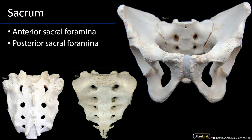Those sacral spinal nerves traverse the sacral canal. Here we're looking at a posterior view of the sacrum, and then they exit through the anterior sacral foramina on the ventral surface of the sacrum. The dorsal or posterior sacral foramina are for the dorsal primary rami of those sacral nerves. Over here on the pelvis we can see the sacrum in situ and the anterior sacral foramina.